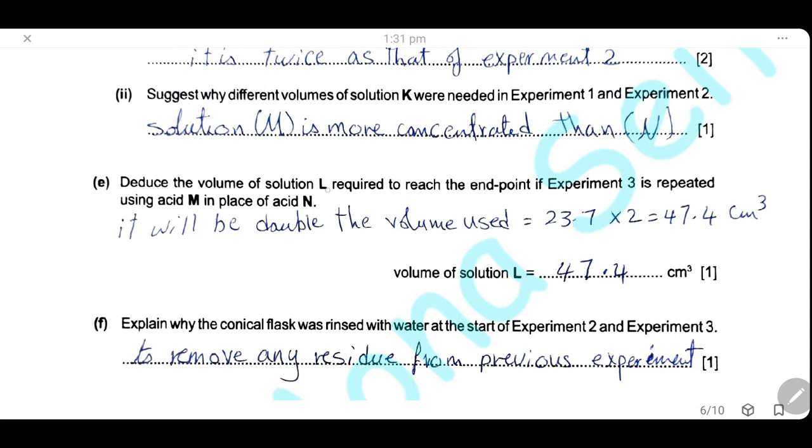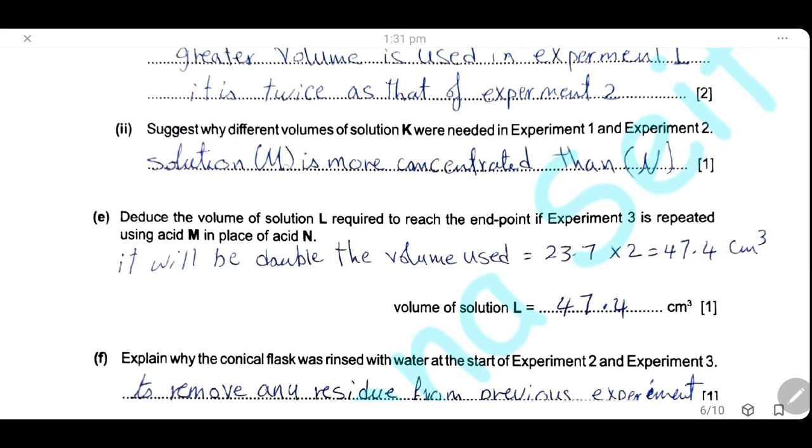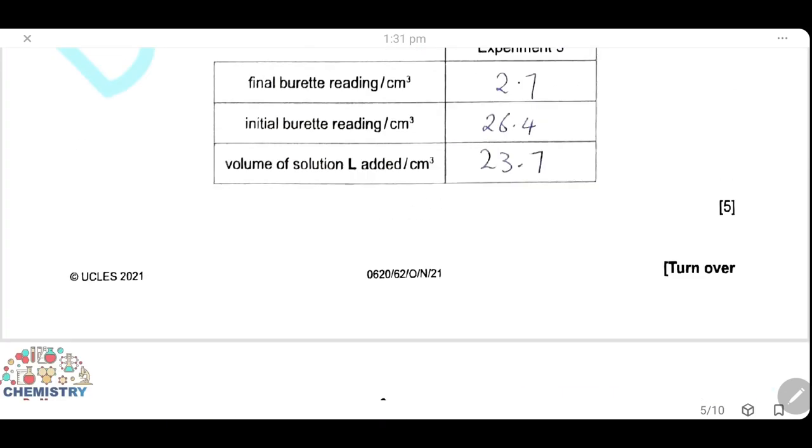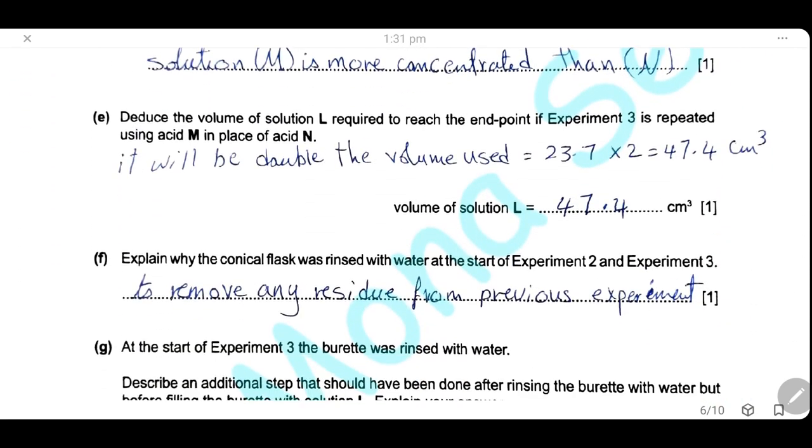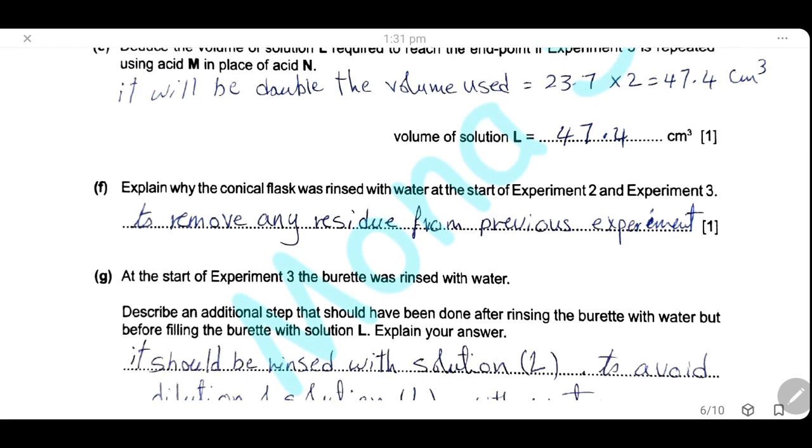Deduce the volume of solution L required to reach the endpoint if experiment 3 is repeated using acid M in place of acid N. As we can see, solution M is double the concentration of N. So we will use double the volume of solution L. Solution L was 23.7 cm³. We will double this volume in case the experiment is repeated using acid M. So it will be 47.4 cm³.